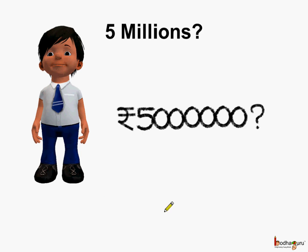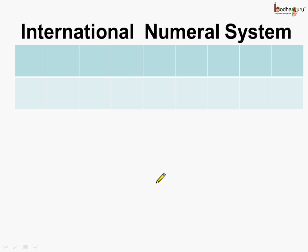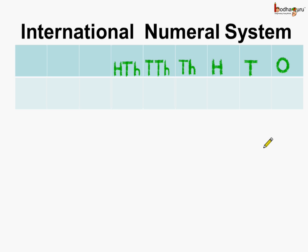Aman said it was equal to five million, and when he was talking in terms of millions, he was using the international numeral system. Let us see the place value chart according to the international numeral system. Starting from the rightmost digit: ones place, tens place, hundreds place, thousands place, ten thousands place, hundred thousands place.